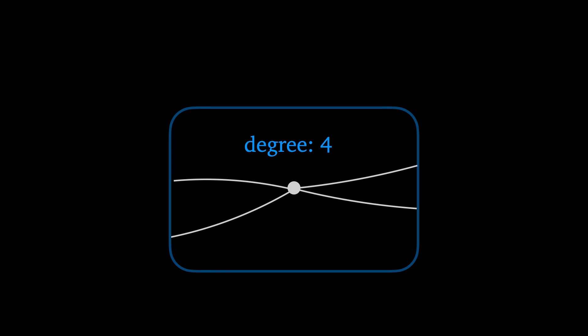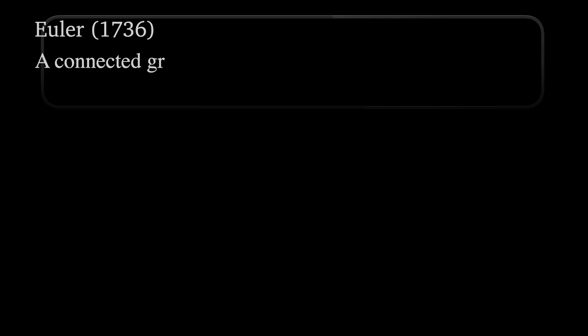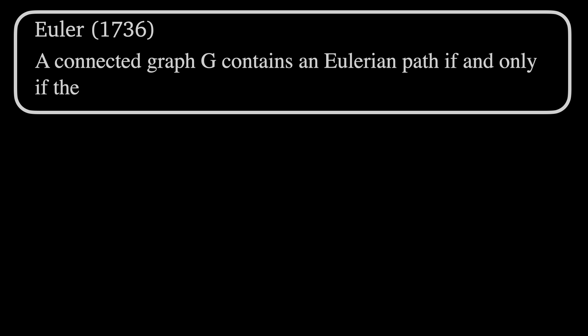And so he discovered a general property of graphs. A connected graph G contains an Eulerian path, that is a path using each edge exactly once and beginning and ending with the same vertex, if and only if the degree of each vertex of G is even.